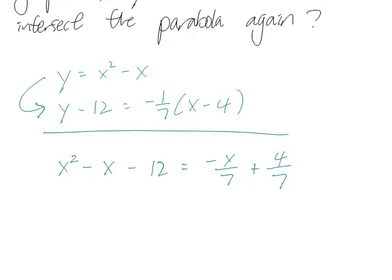I don't want a denominator sitting around, so I'll multiply everything by 7. And 7 times 12 is 84. That's equal to minus x plus 4, because the denominators are gone.